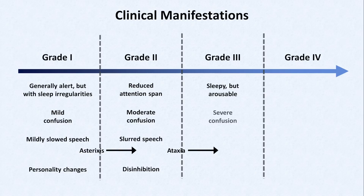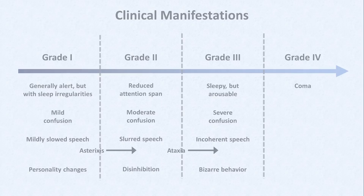In grade three, patients are sleepy but still arousable. Confusion is severe and immediately apparent. Speech is often so slow and dysarthric as to be incoherent, and a variety of bizarre behaviors can be observed during periods when the patient happens to be awake. Grade four encephalopathy is when the patient has progressed to coma.